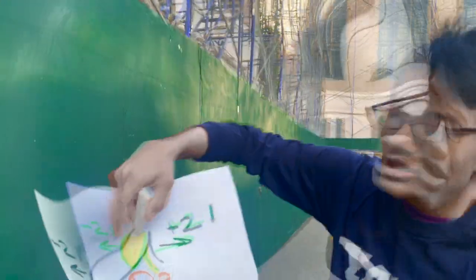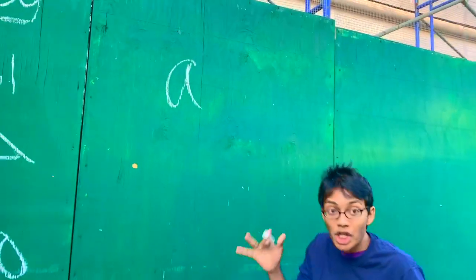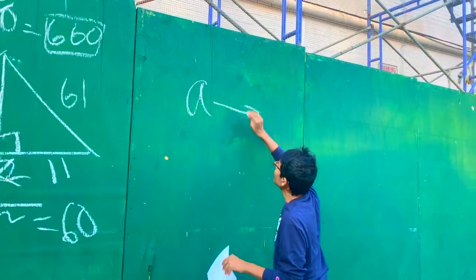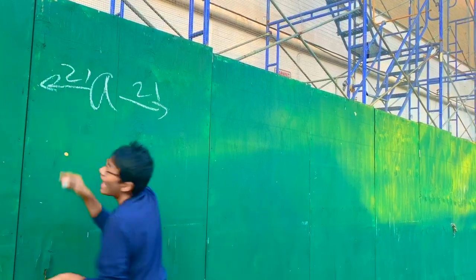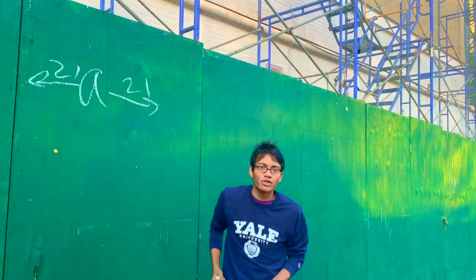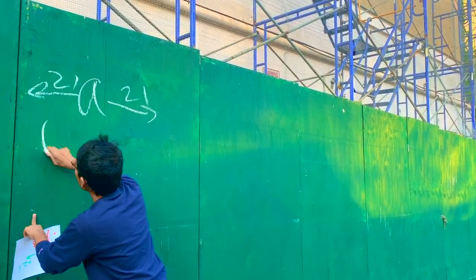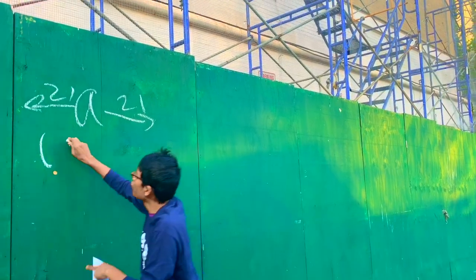All right folks, so today we're going to be taking a look at yet another number theory problem. I've got a variable a — let it represent someone's age. 21 years later and 21 years before, we're going to take their ages and multiply them together to get some number.